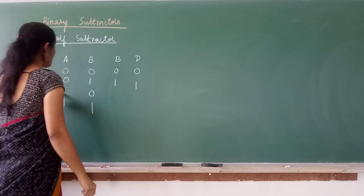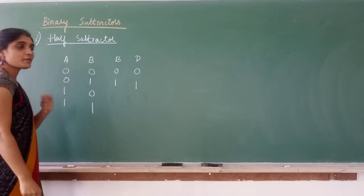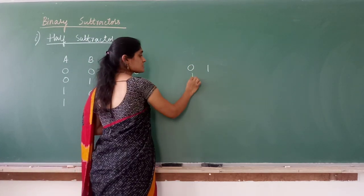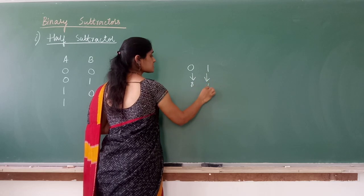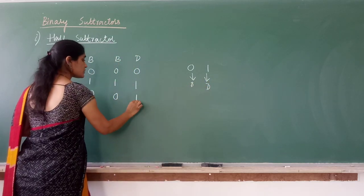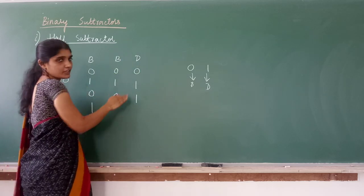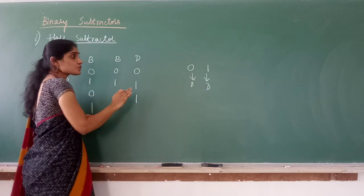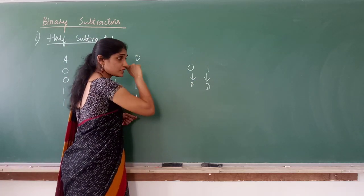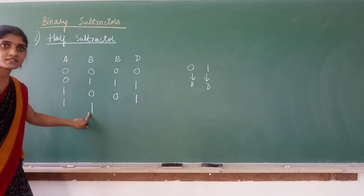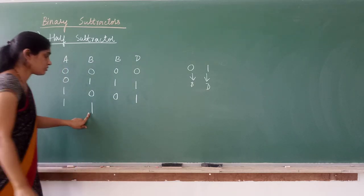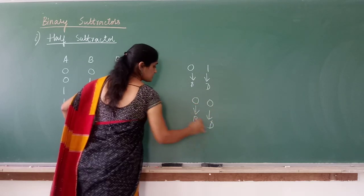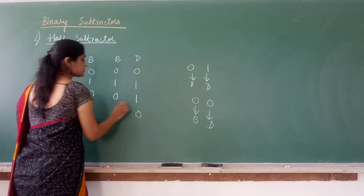Third case: 1 minus 0 equals 1. How do we represent 1 in binary? 01. So borrow is 0 and difference is 1. Be careful about which is borrow and which is difference. Fourth case: 1 minus 1 equals 0. Binary representation of 0 is 00. So borrow is 0 and difference is 0.